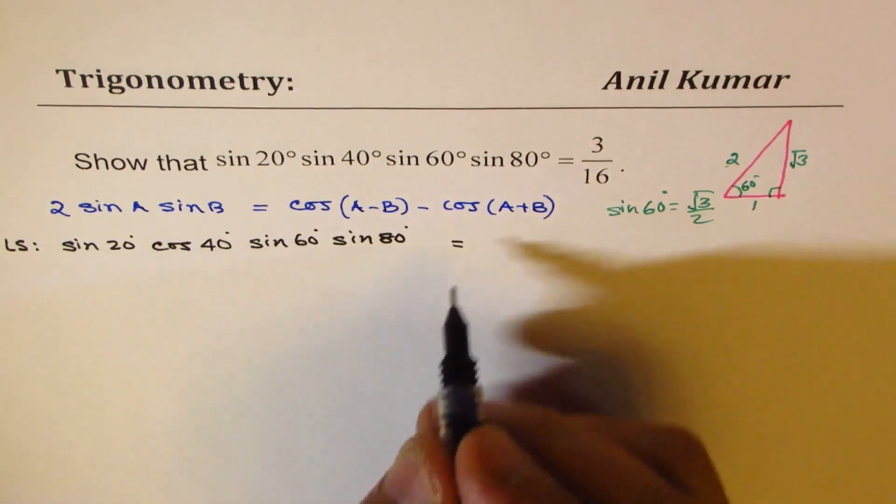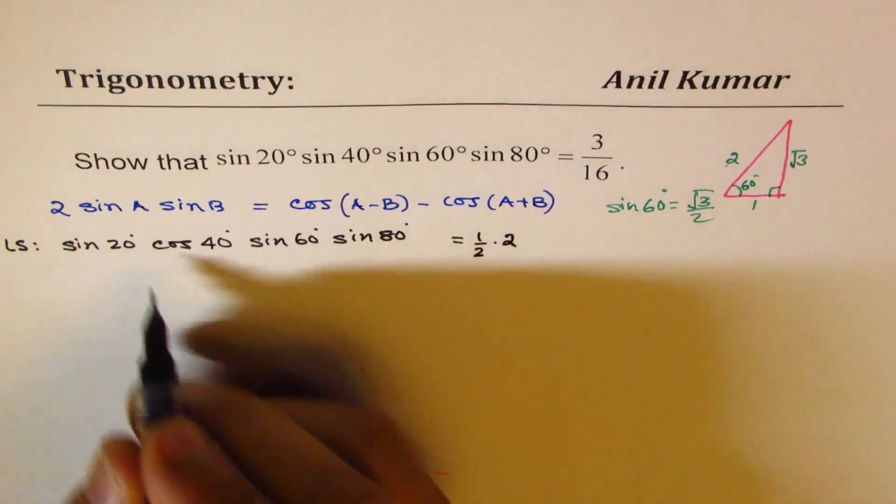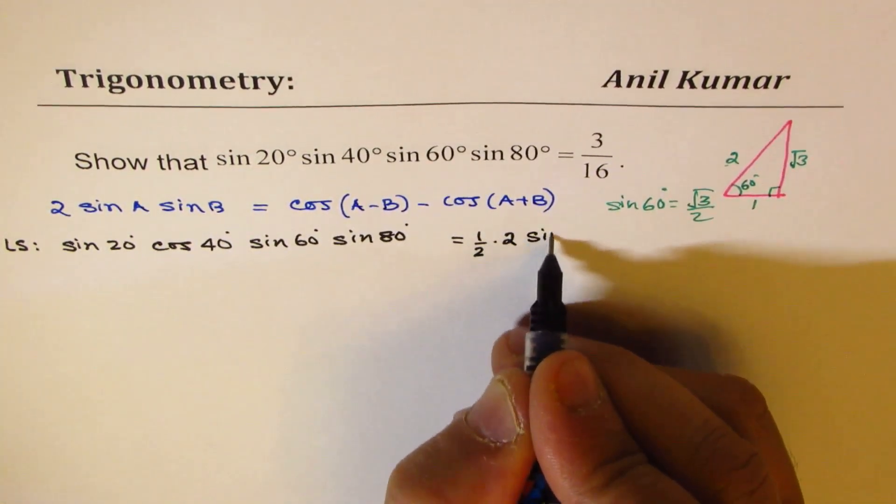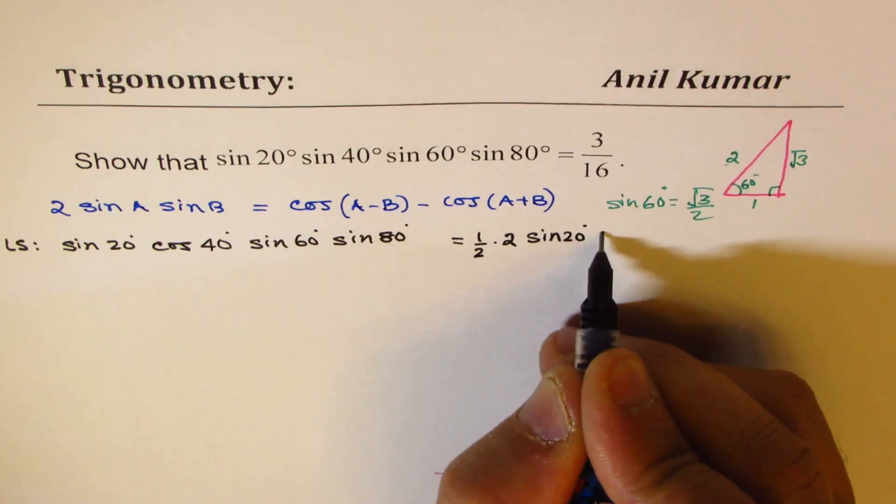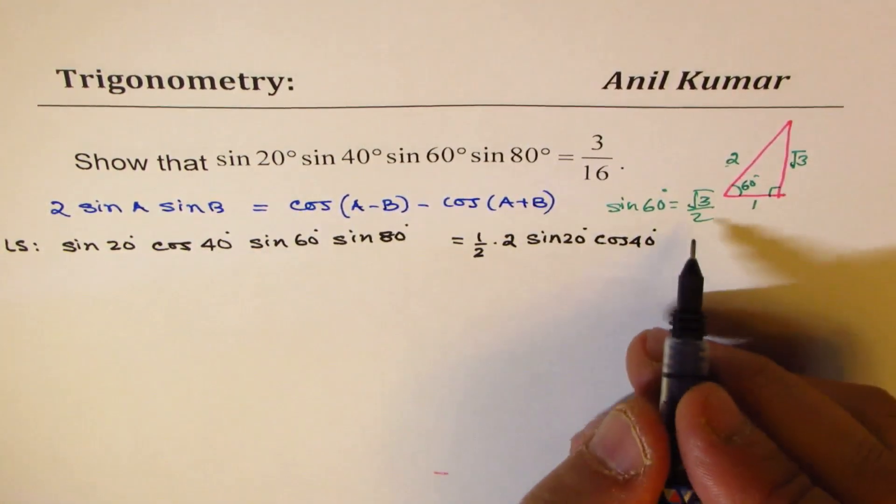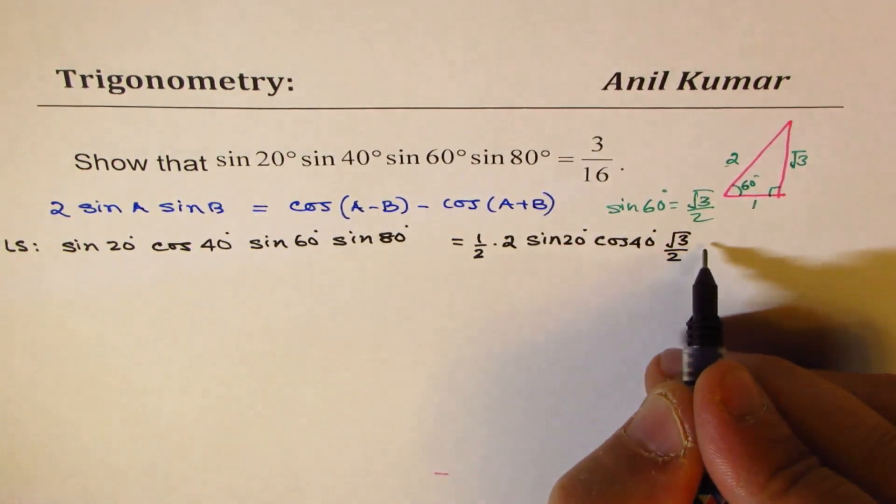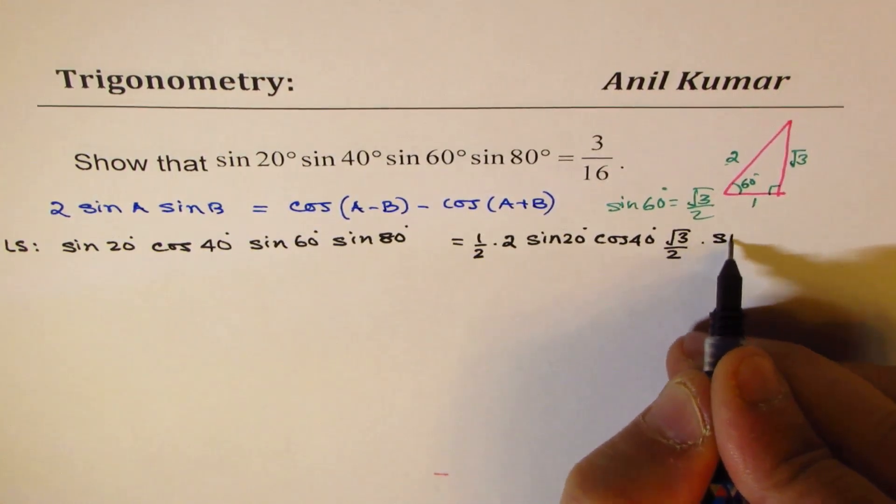1/2 times twice, sin 20°, cos 40°. Sin 60°, I'll write as √3 over 2. Just substitute the value. And we have sin 80°.